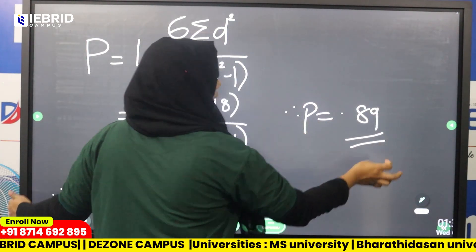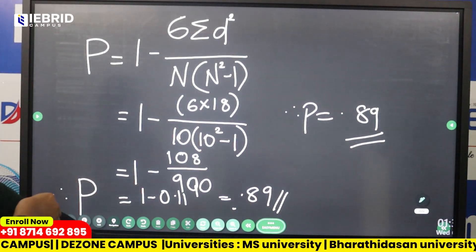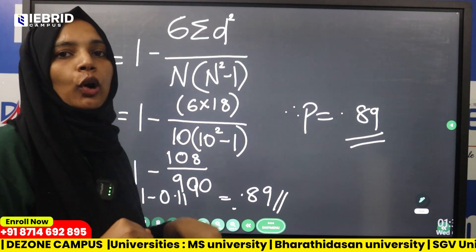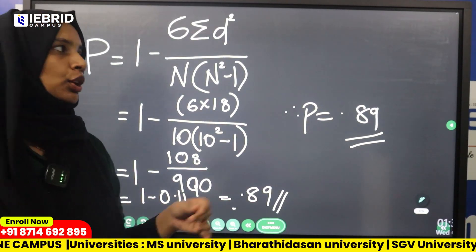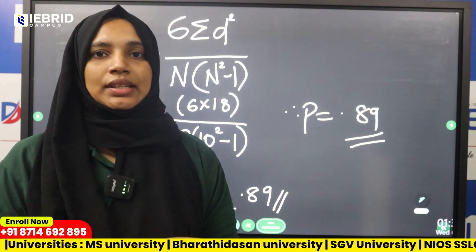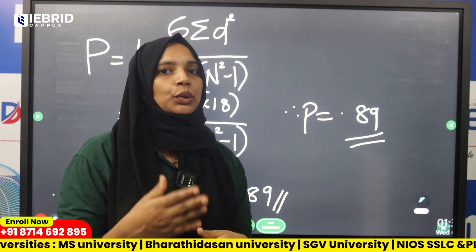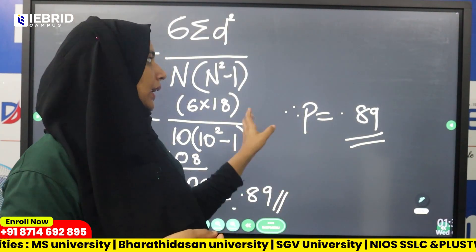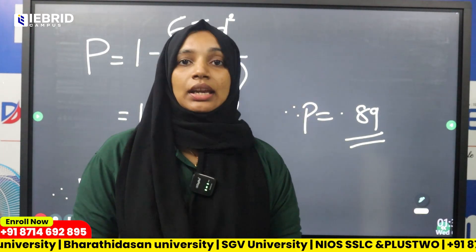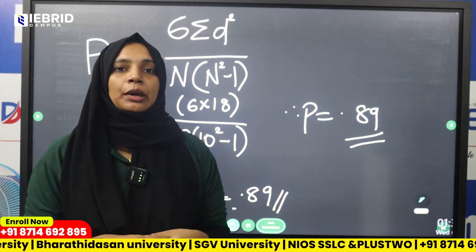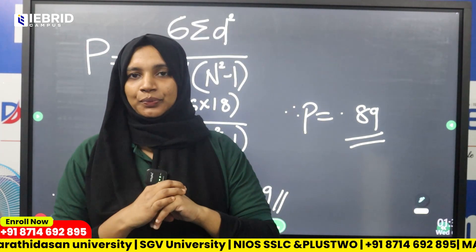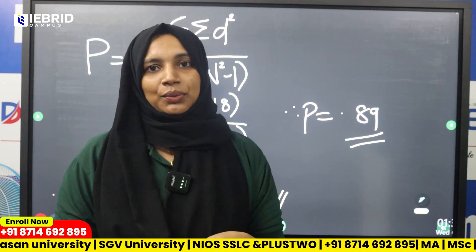Therefore, P is equal to 0.89 using the Spearman method. Now we have discussed these two questions in this class. Thank you.